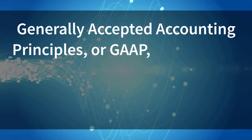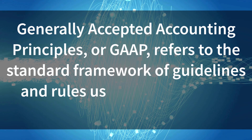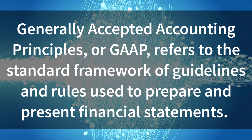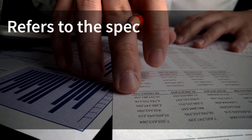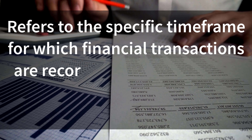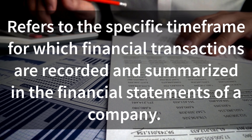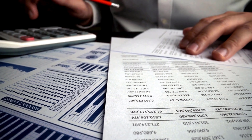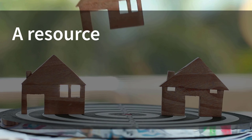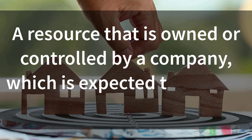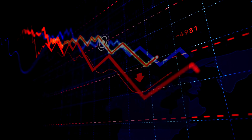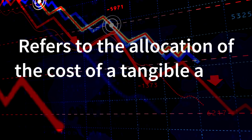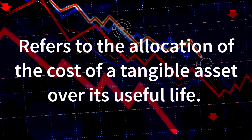GAAP: Generally accepted accounting principles, or GAAP, refers to the standard framework of guidelines and rules used to prepare and present financial statements. Accounting Period: Refers to the specific timeframe for which financial transactions are recorded and summarized in the financial statements of a company. Asset: A resource that is owned or controlled by a company, which is expected to provide future economic benefits. Depreciation: Refers to the allocation of the cost of a tangible asset over its useful life.